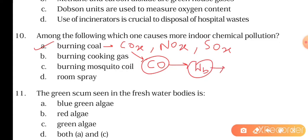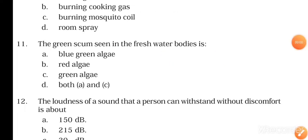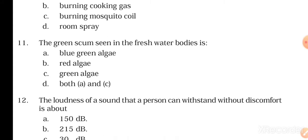The next question is: the green scum seen in freshwater bodies is blue-green algae, red algae, green algae, or both A and C. The right answer will be both A and C. As you guys know that blue-green algae and green algae both grow on the surface of water and create the green scum, so the right answer will be both A and C.